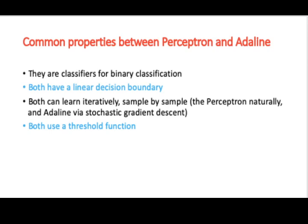Though there are some subtle differences between a perceptron and an ADALINE, they share some common properties. What are they? They are all classifiers for binary classification. The perceptron and ADALINE have a linear decision boundary. The learning pattern, if you see, both learn in an iterative fashion. We call it sample by sample learning. A perceptron basically does learning sample by sample in a natural fashion, whereas an ADALINE neural network also learns sample by sample, but via the stochastic gradient descent. When you talk of a threshold function, both use threshold functions, either it could be a perceptron or an ADALINE.